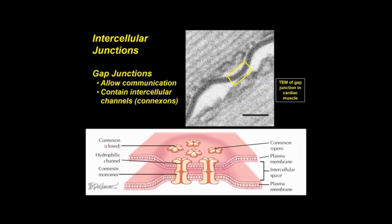A gap junction is seen by TEM and schematically. They allow communication between adjacent cells, with a narrow 2 nm gap separating opposing membranes. Proteins known as connexins form hexamers called connexons that pack tightly in groups within the membrane and form channels. Each half connexon contains a central pore about 3 nm in diameter that connects with an opposing connexon in the neighboring membrane. Connexons, like other voltage-gated channels, can undergo reversible open and closed conformations.